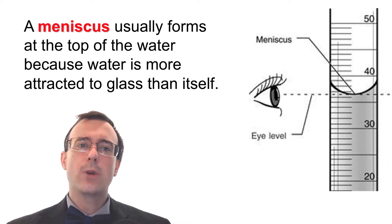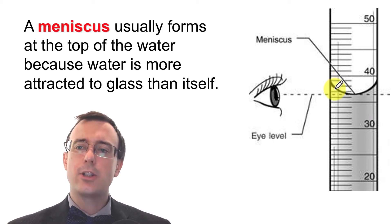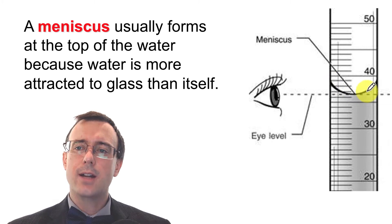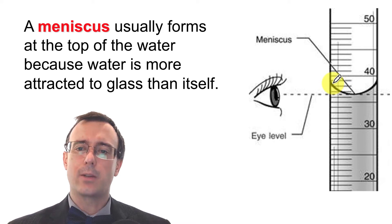A meniscus usually forms at the top of the water or liquid you're measuring because water is more attracted to glass than to itself. A meniscus typically has a U-shape where the liquid climbs up on the sides of the container. It depends on the material of the container and the liquid being measured, but it's quite common for many different liquids.